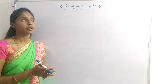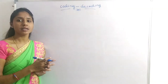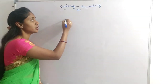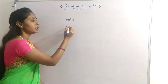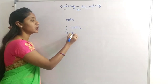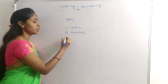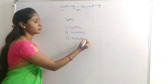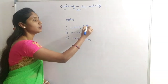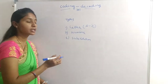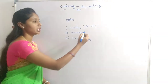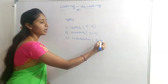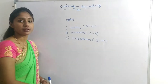Coding and decoding — we know the definitions of these two words. There are different types of codings. The types are: first, letter coding; second, number coding; and third, substitutional coding. For letter coding, we should know A to Z alphabets. For number coding, we know 0 to 9. And for substitution, we have symbols, numbers — a combination of all is substitutional coding.